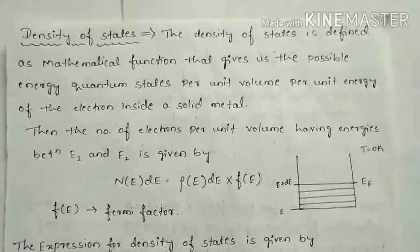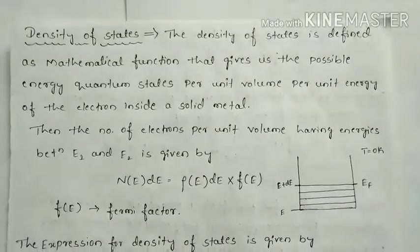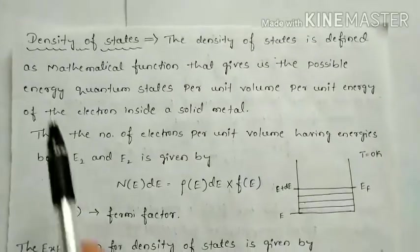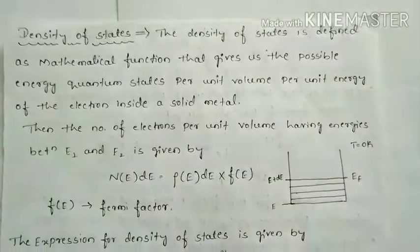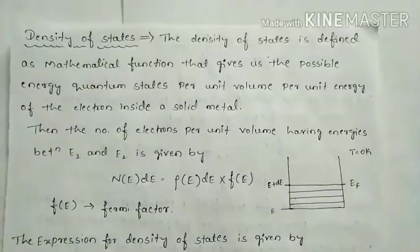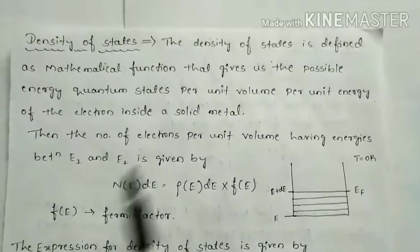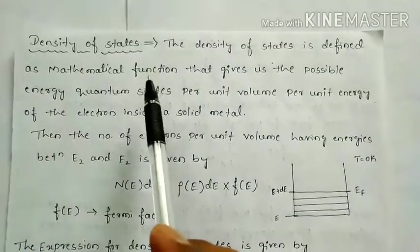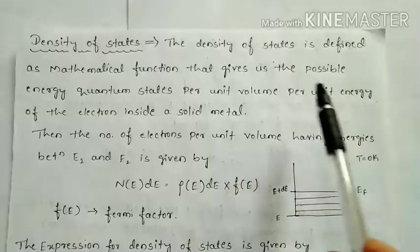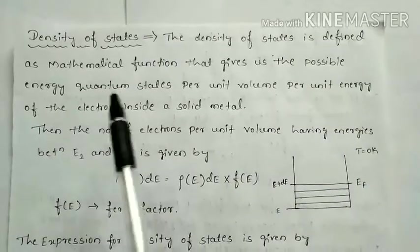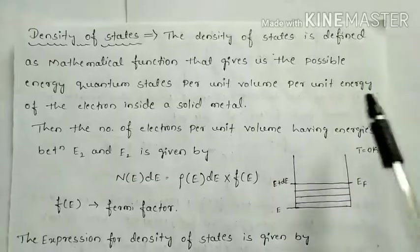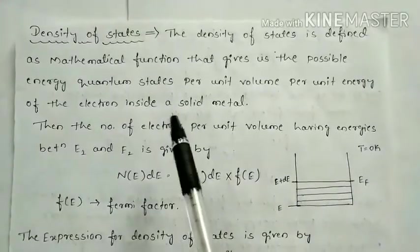Hello dear students, today we will discuss the next point in quantum free electron theory — that is density of states. The density of states is defined as a mathematical function that gives us the possible energy quantum states per unit volume per unit energy of the electron inside a solid metal.